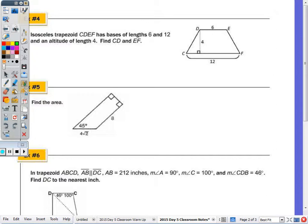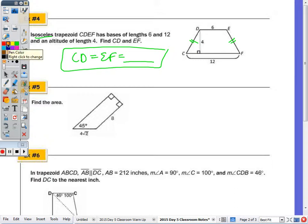Number 4, isosceles trapezoid has bases of length 6 and 12 and an altitude of length 4. Find the length CD and EF. Now if it's isosceles, the non-parallel sides are going to be congruent. So when I find CD, we have EF. If you draw another altitude here. So this is a right angle, all altitudes are congruent, so this is also 4. So 4, 6, this is a right angle, it's a trapezoid, these are parallel, so this is also going to be 6. We have a rectangle there in the center. What's going to be the two segments of both triangles?